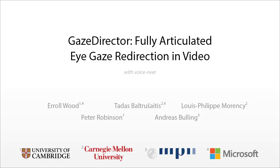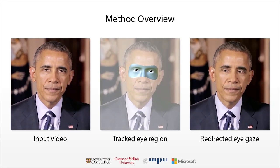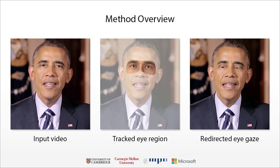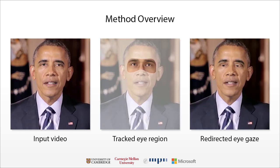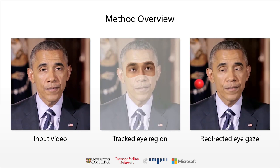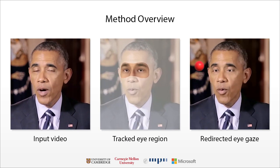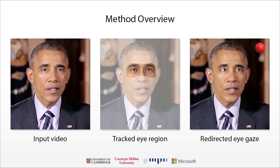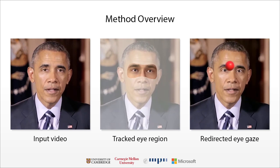We present GazeDirector, the first method for fully articulated gaze redirection in video. Given a video, we track both the shape and texture of the eyes using a multi-part eye region model. We can then change where someone is looking by re-rendering their eyes, allowing us to manipulate their perceived gaze direction.